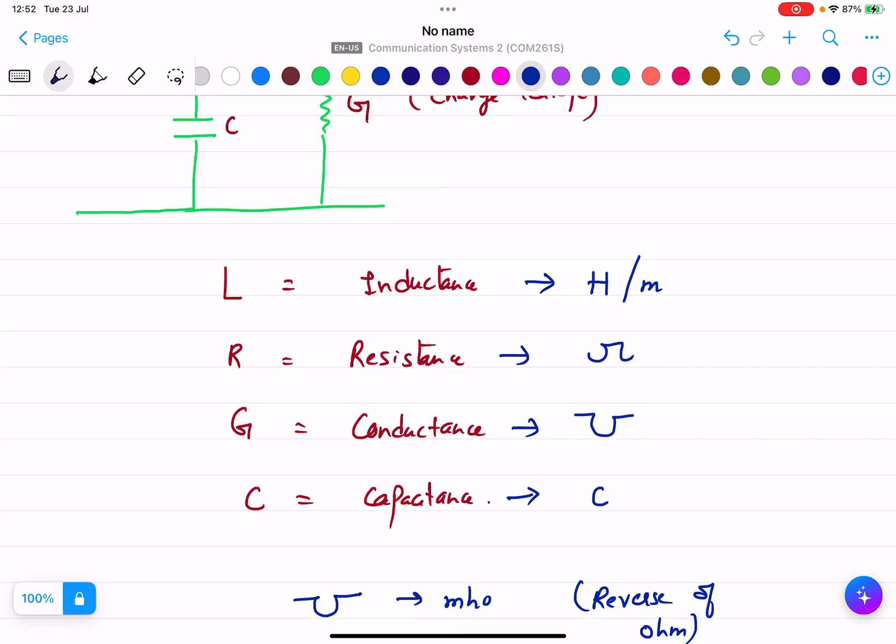So we express these as Henry per meter, ohm per meter, mho per meter, and capacitance per meter. You need to remember these four constants - these are the primary constants of the transmission line.